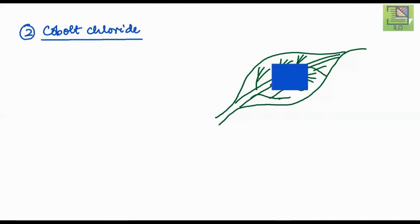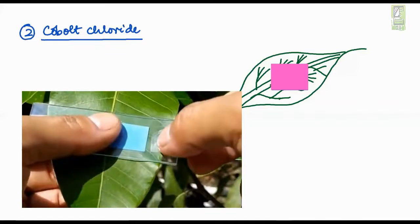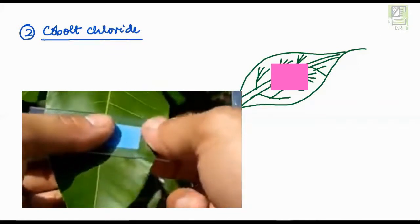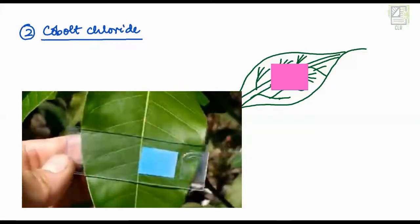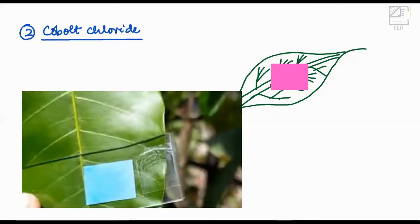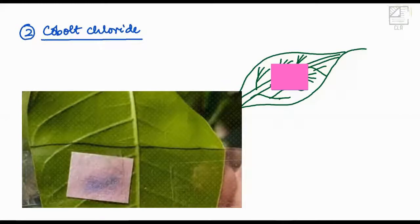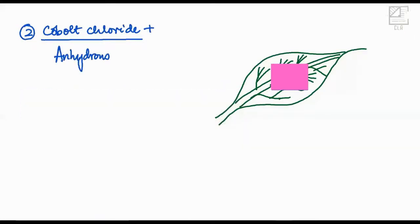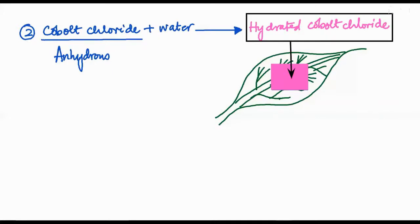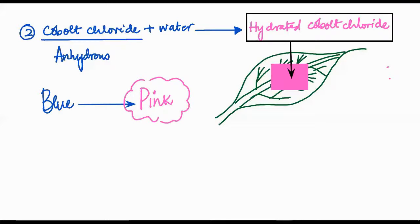The cobalt chloride paper strip is placed on both the upper and lower surfaces of the leaf. The color change to pink indicates the presence of water. The lower surface loses more water due to stomatal openings, which lose a lot of water during transpiration. In the video, two strips are attached to the upper and lower surfaces, covered with transparent glass slides, and left for a few hours — the lower surface strip turns pink much more rapidly.